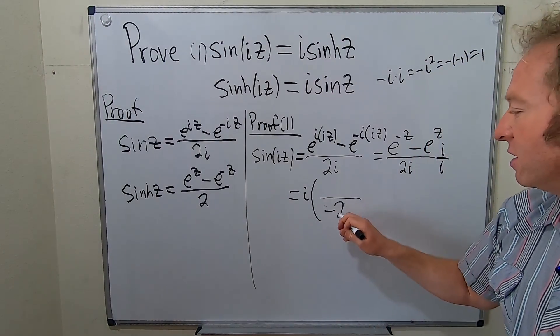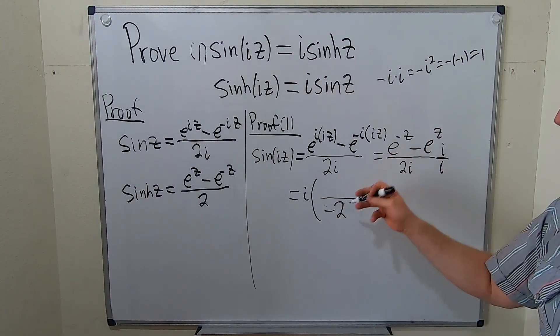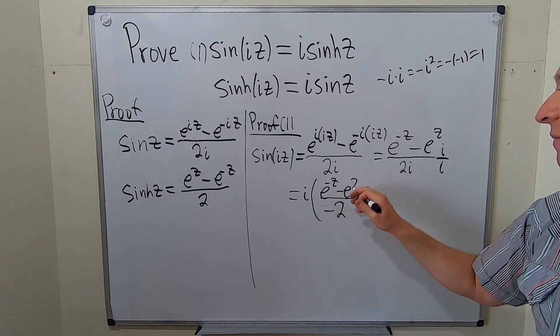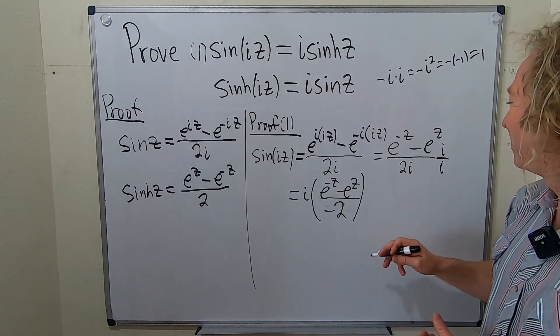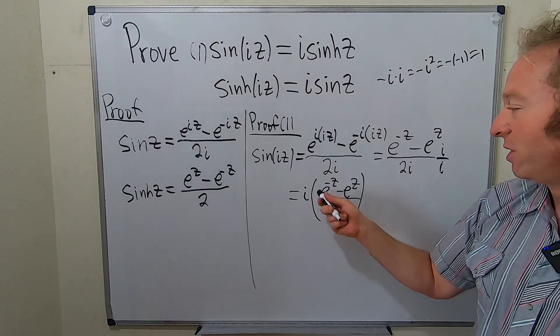That might make it a little bit easier to understand. So i times i is i squared. So that's negative 2. And then here we have e to the negative z minus e to the z.